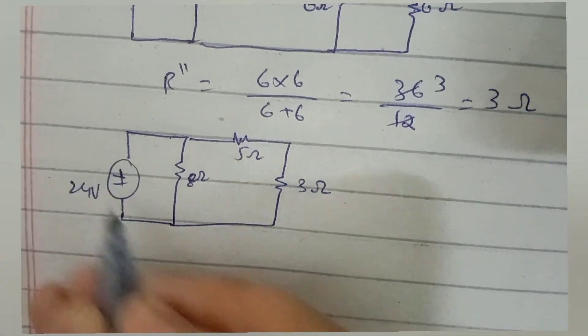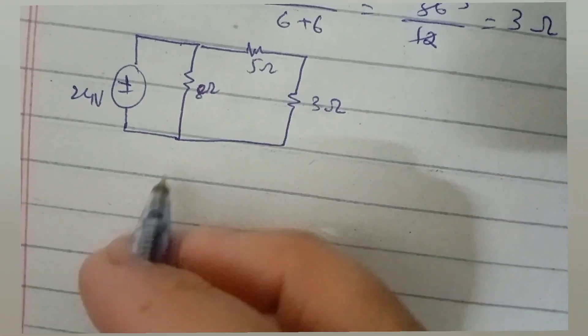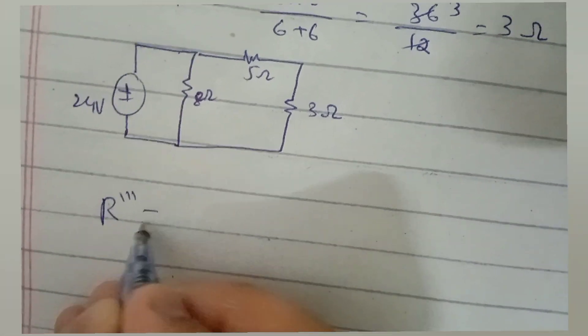5 and 3 ohm resistors are now in series and R''' will be equal to 5 plus 3 equals 8 ohms.